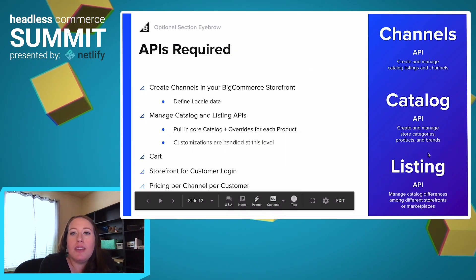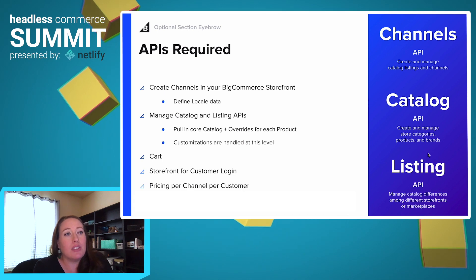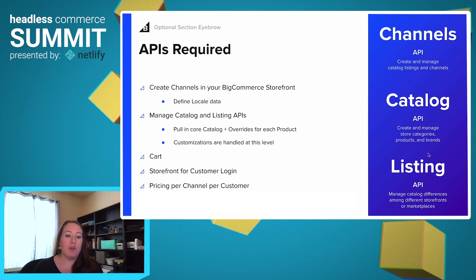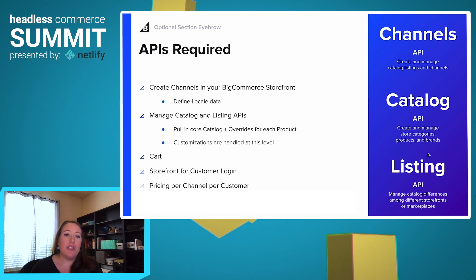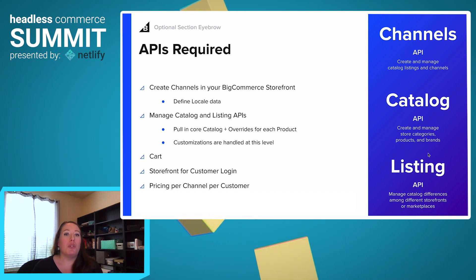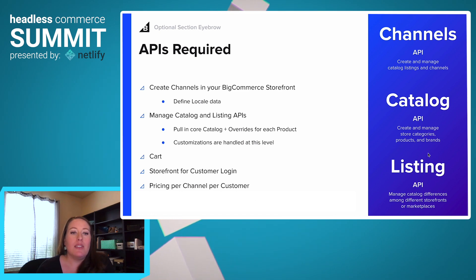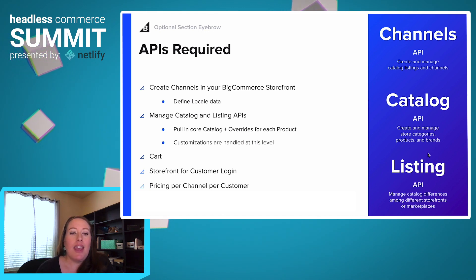Here are some of the APIs that are required. The big three are channels, catalog, and listing APIs. The channel API is used for the creation and management of your listings, taking over the heavy lifting of doing local data. When you put products to those channels, you can change the listing values to make them more locale-specific. This works in conjunction with catalog to help extend features so you can override different product data and have customizations at every level. And to have a fully functioning app, you will also need the cart APIs, the storefront APIs, and the pricing APIs.